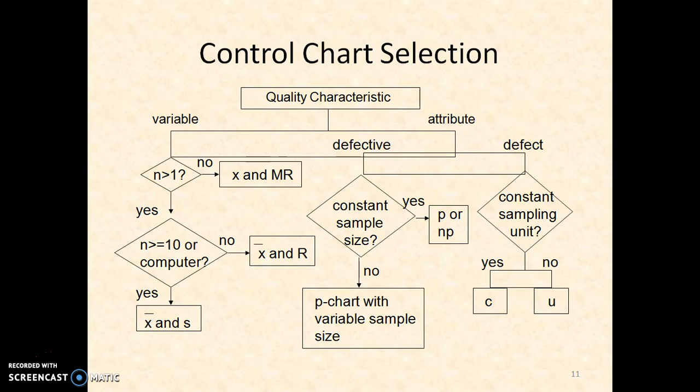This is a simple guideline for when to select which type of chart. If it is variable data, you can use X-bar and R chart or X-bar and S chart. If it is attribute data, they are divided into defective components or defects. For defectives, you can plot a P chart. For number of defects, you can plot C chart or U chart.